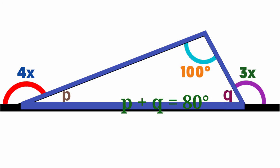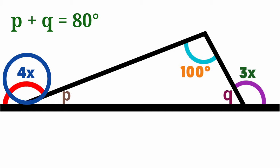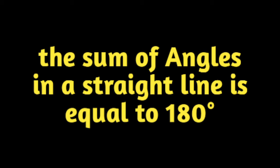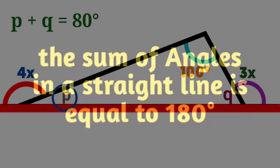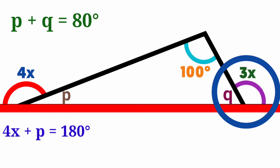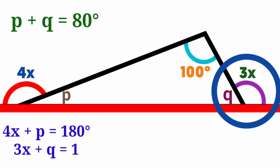Keep that equation aside — we'll use it later. Looking at 4x and angle P, they are on the same straight line, and the sum of angles on a straight line is 180 degrees, so 4x plus P equals 180 degrees. Similarly, 3x and angle Q also form a straight line, giving us 3x plus Q equals 180 degrees.